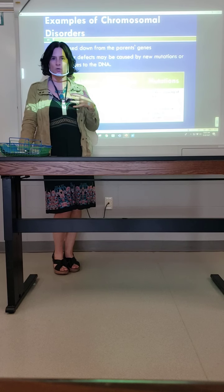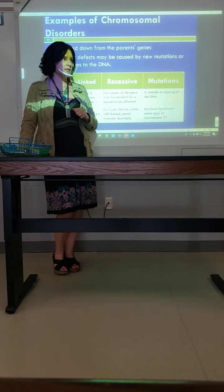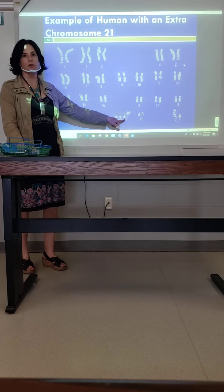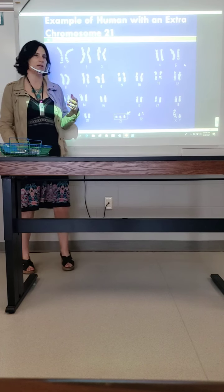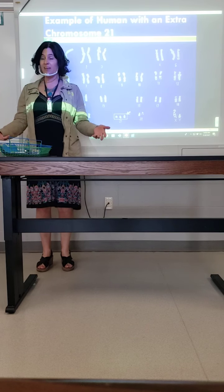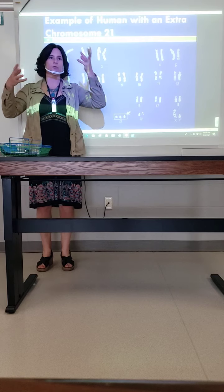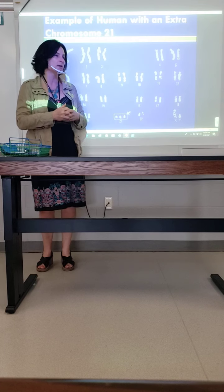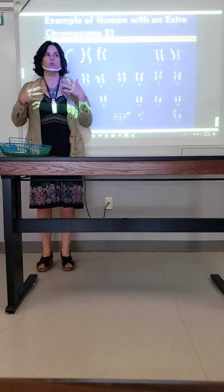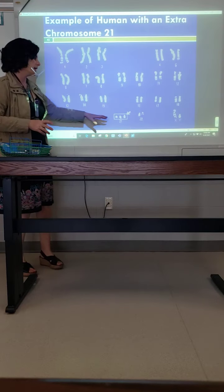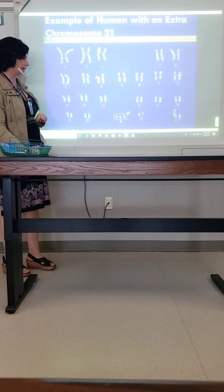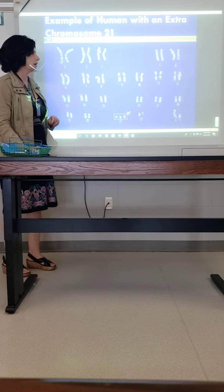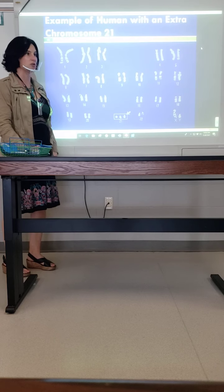Down syndrome is not hereditary — it doesn't get passed on — but it is a mistake. It's on chromosome number 21, where there's an extra chromosome. Extra information isn't a good thing; it's overload. The body gets really confused and things don't totally form right, which is why there's often a shorter lifespan and major developmental issues. It happens at random and is not a genetic disorder that gets passed on to subsequent offspring.